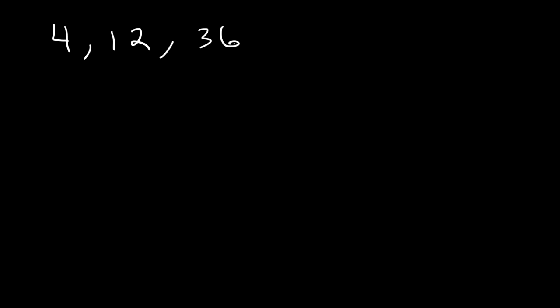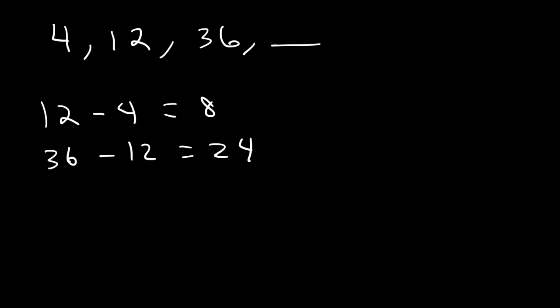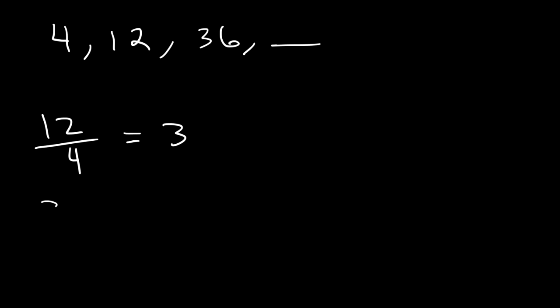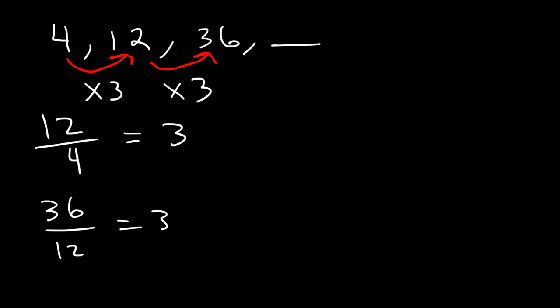Here's another similar example. Let's say if we have the numbers 4, 12, 36. What is the next number in the sequence? Let's see if it's an arithmetic or geometric sequence. If we take the second term and subtract it by the first, we'll get 8. And if we take the third and subtract it by the second, this will give us 24. So therefore we don't have an arithmetic sequence. Let's test to see if it's a geometric sequence. 12 divided by 4 will give us 3. And 36 divided by 12 is 3. So we have a common ratio of 3. If we multiply 36 by 3 that's 108. 108 times 3 is 324. And 324 times 3 is 972.